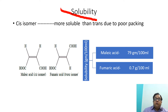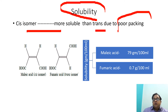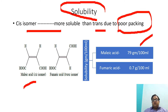The next parameter is solubility. Cis isomers are more soluble compared to trans isomers for the same reason — poor packing results in greater solubility. For example, maleic acid has a solubility of 79 grams per 100 mL.